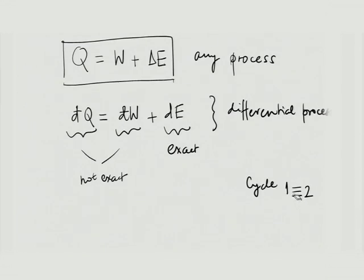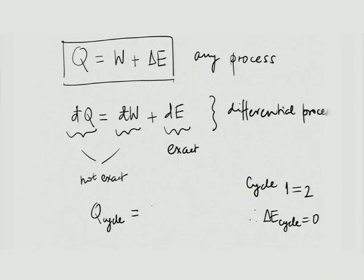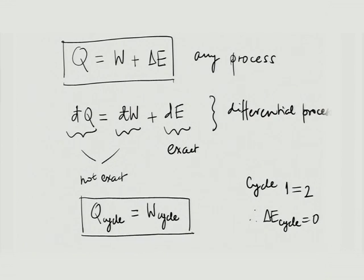Let us consider a cycle. A cycle means state 1 is the same as state 2, and hence delta E is zero. Therefore Q over a cycle equals W over a cycle — something we already knew intuitively, but this is our proper derivation of that result.